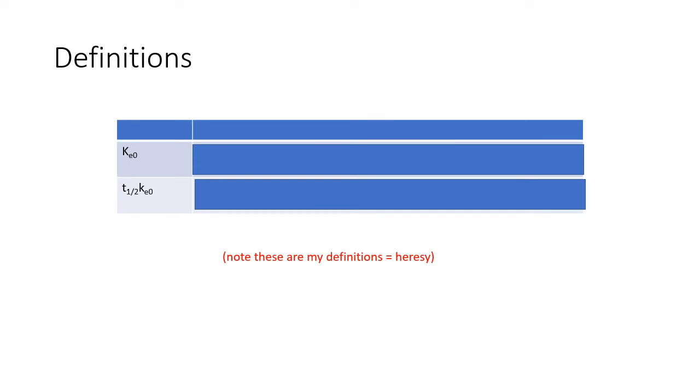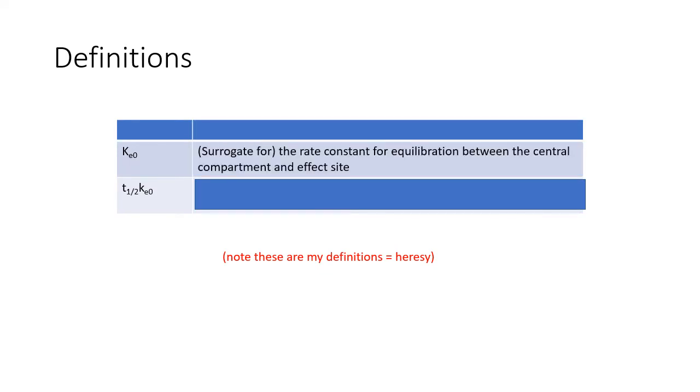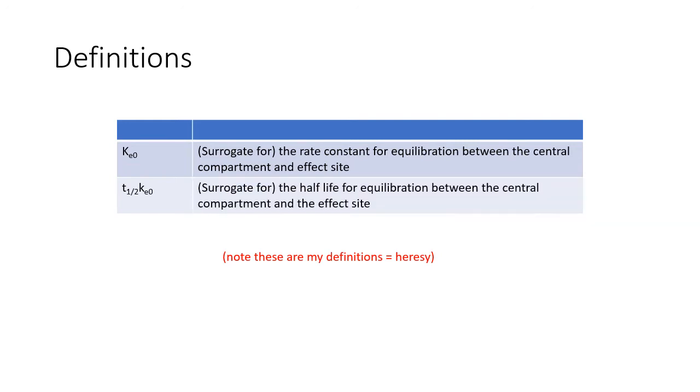Let's define these terms. I define the KE0 as a surrogate for the rate constant for equilibration between the central compartment V1 and the effect site VE, and therefore the T half KE0 is the surrogate for the half-life for equilibration between the central compartment and the effect site.